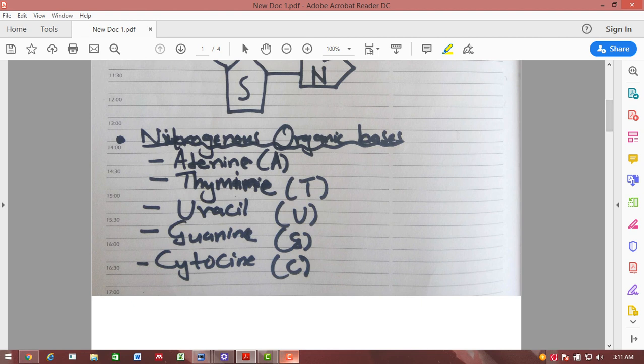Now nitrogenous organic bases include adenine which is abbreviated by A, thymine which is T, uracil which is U, guanine which is G, and cytosine which is C.